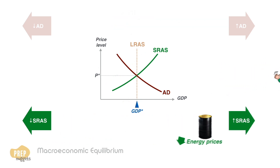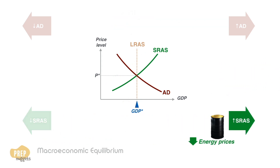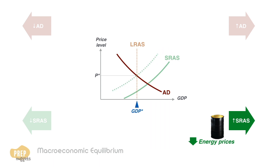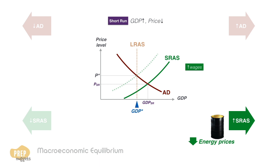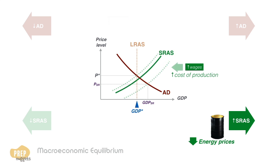Our final case to consider is an increase in SRAS due to a decrease in the price of important productive inputs. This results in a new short-run equilibrium where GDP is greater than full employment GDP and the price level is lower. The situation may eventually correct itself, where the tight labour market pushes wages up, increasing production costs and shifting SRAS back to its original equilibrium.